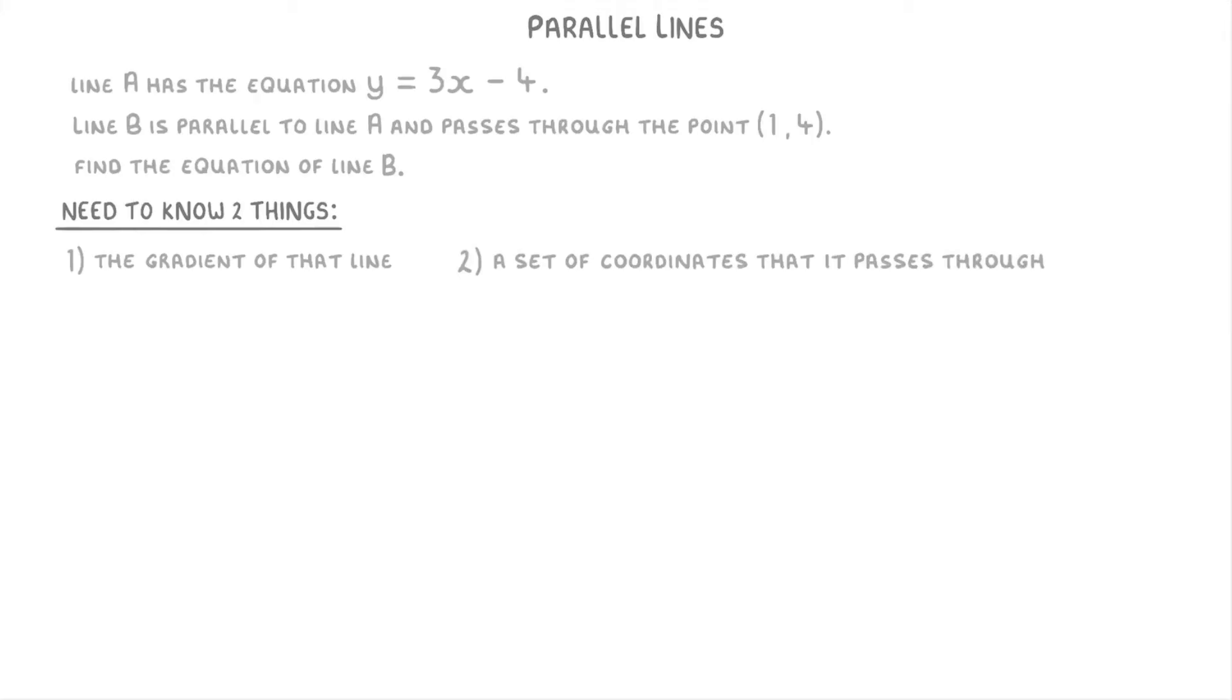In this case, we already know the coordinates, because they tell us in the question that it passes through the point (1, 4). So all we need now is the gradient of the line.